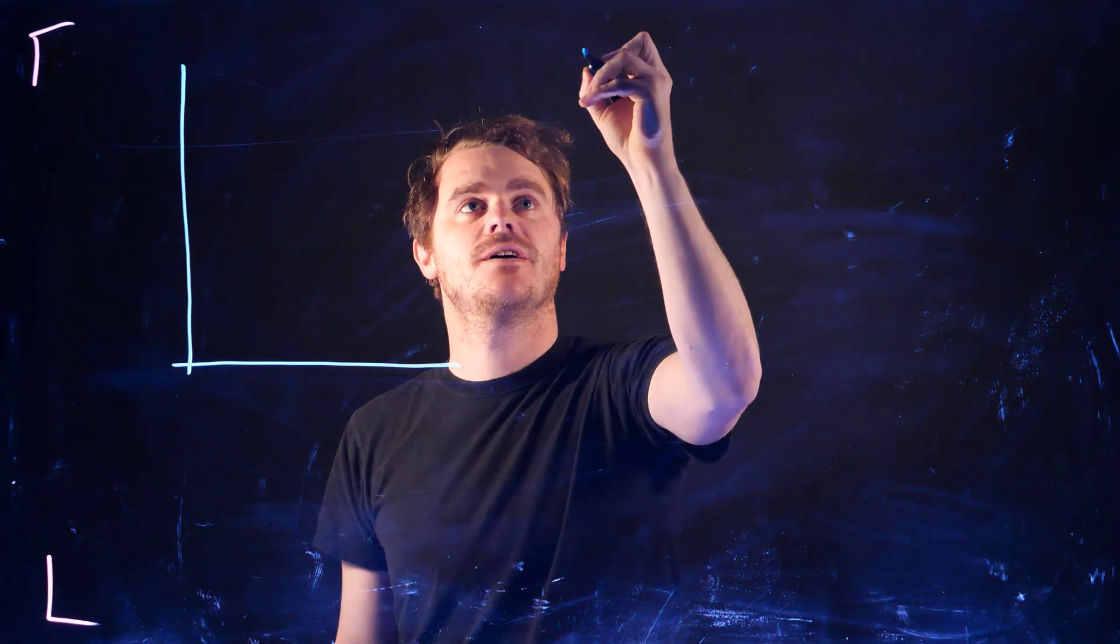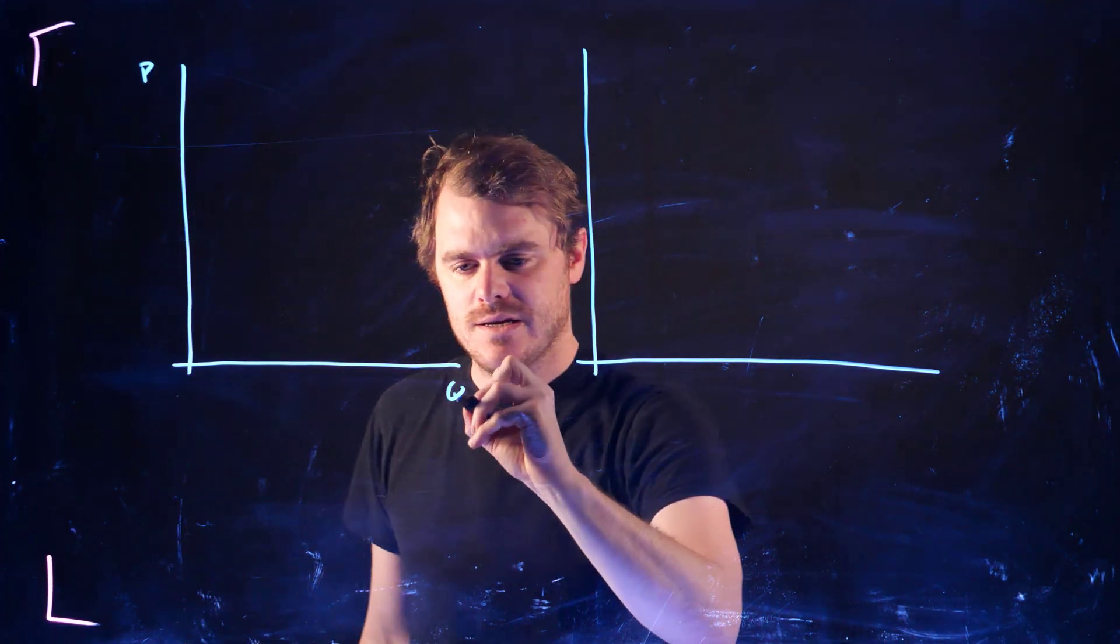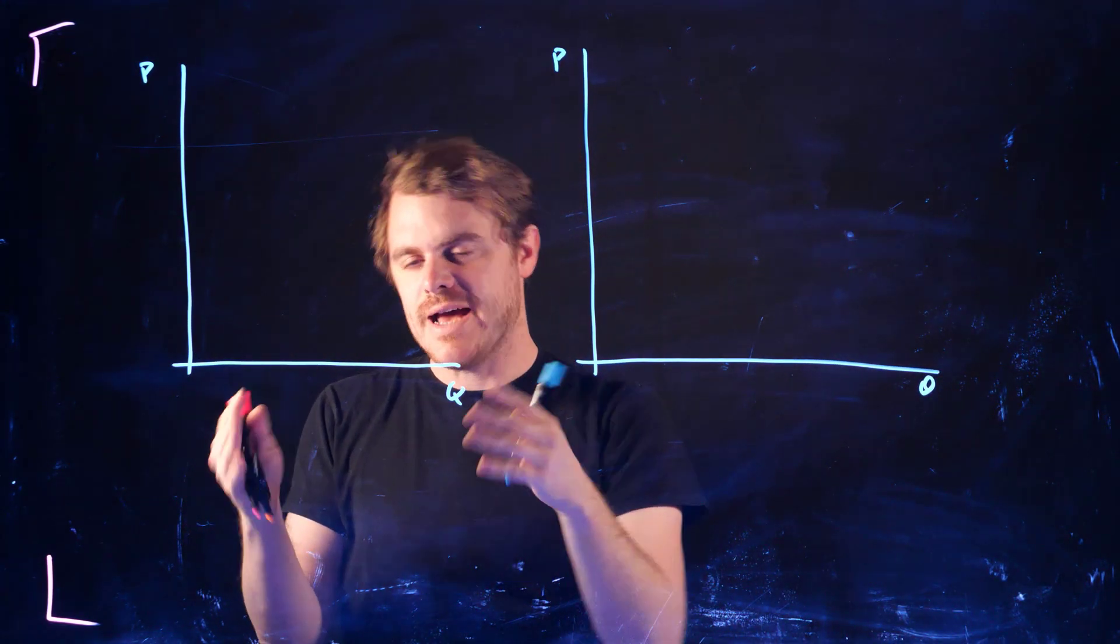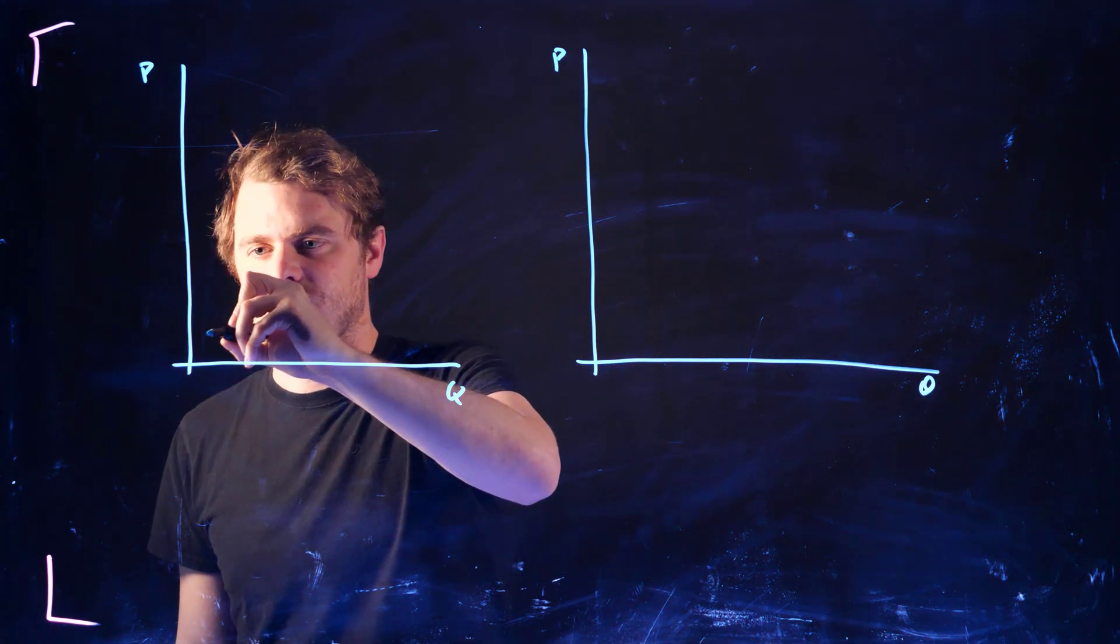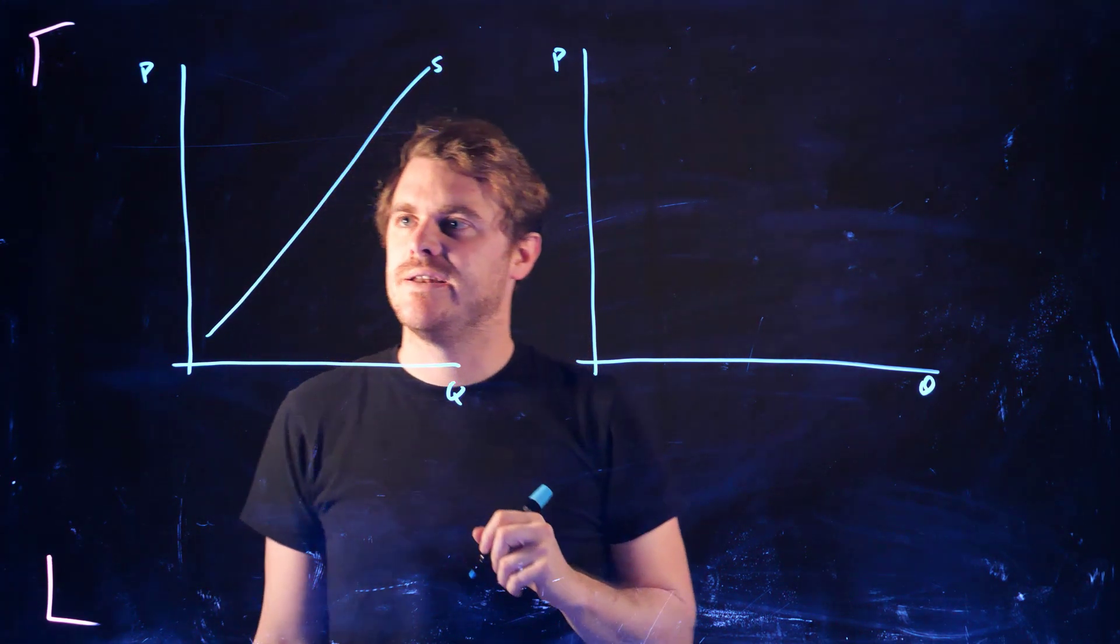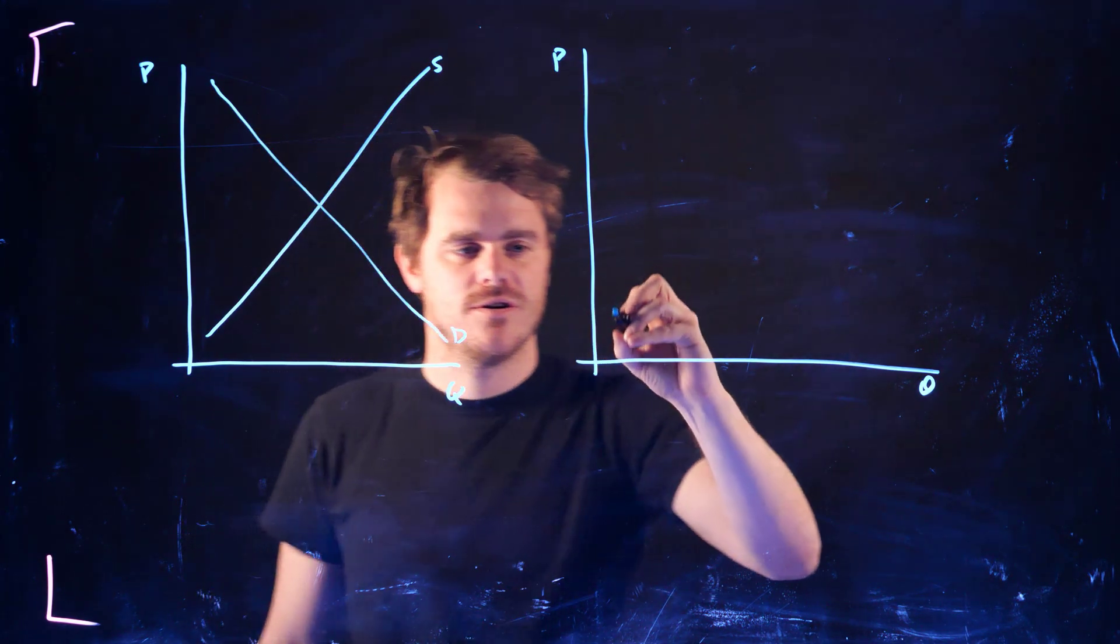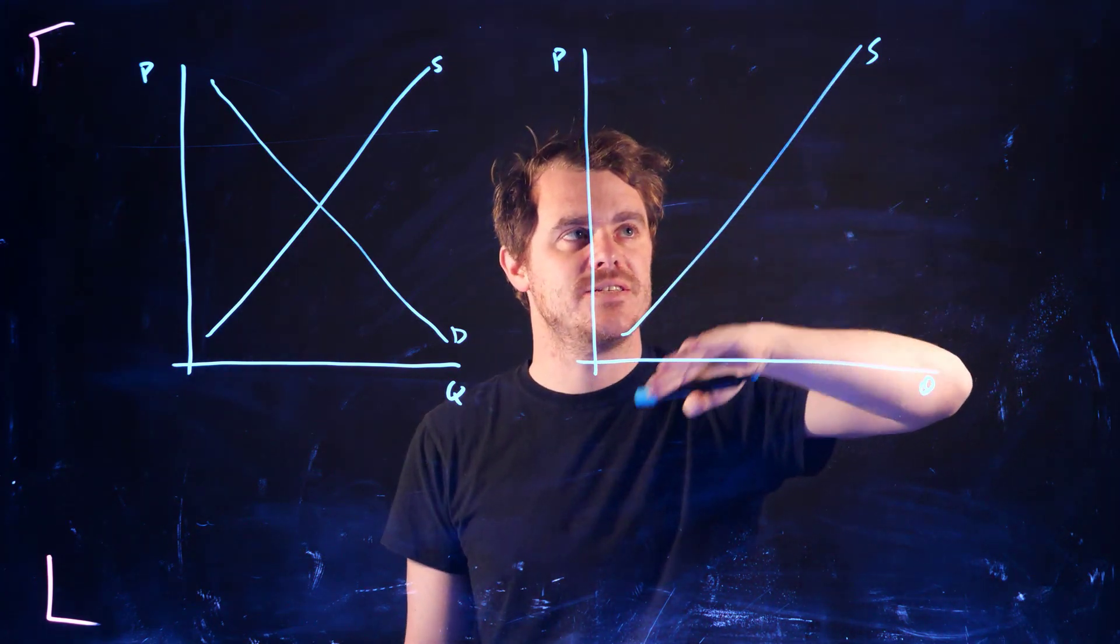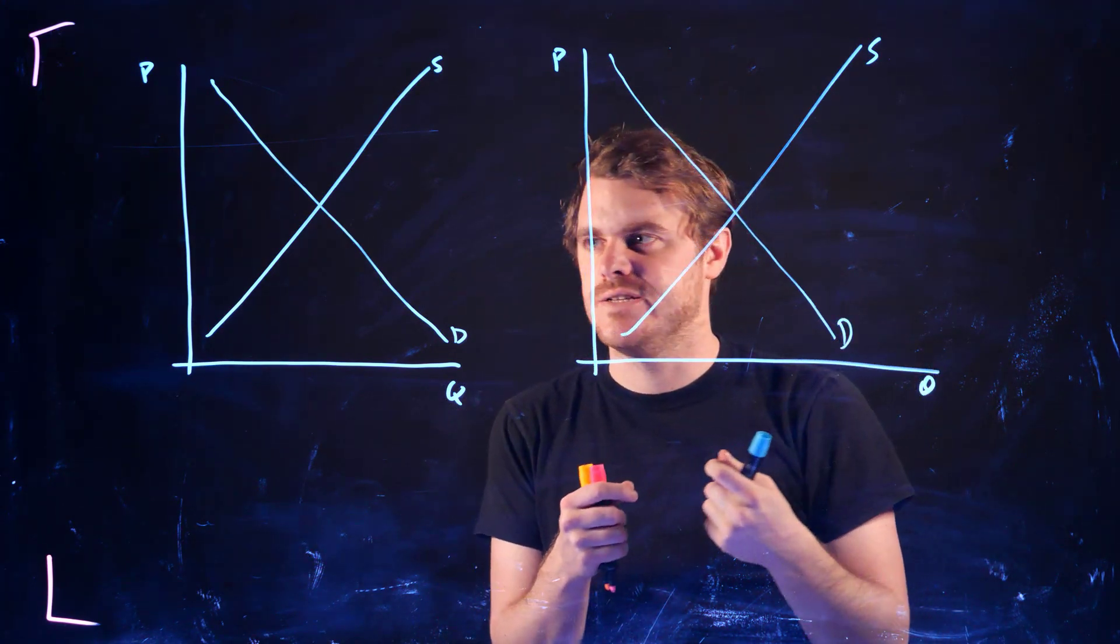All right, so let's draw two diagrams side by side here. So price and quantity on each of these axes, and one we're going to show export, one we're going to show imports. So let's say this is the Canadian producer supply curve, this is the Canadian consumers demand curve. So again, this is about the domestic market in Canada, and this is their suppliers. And this demand curve is the demand curve from Canadian consumers.